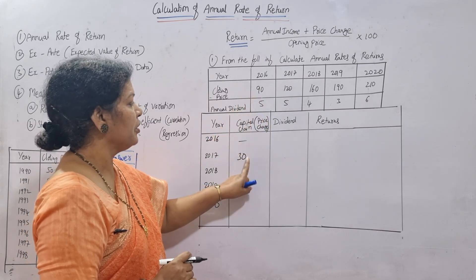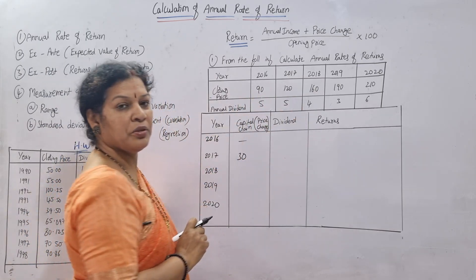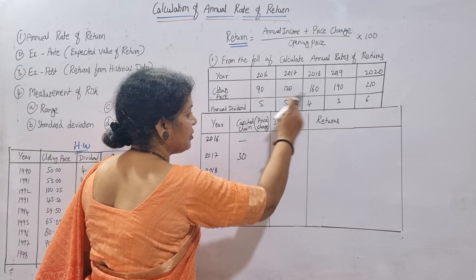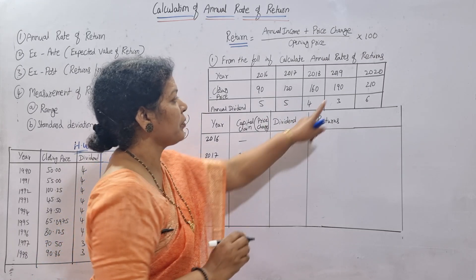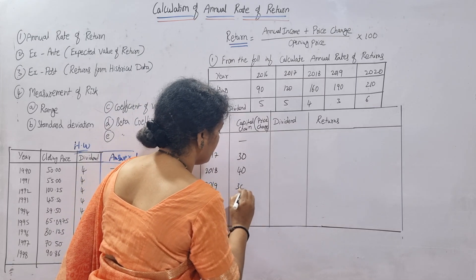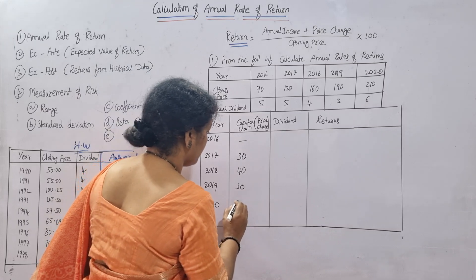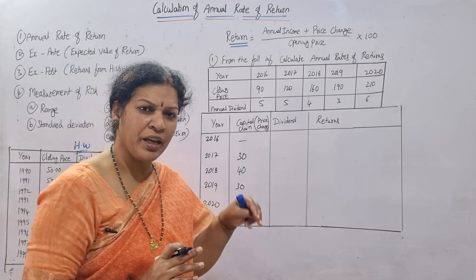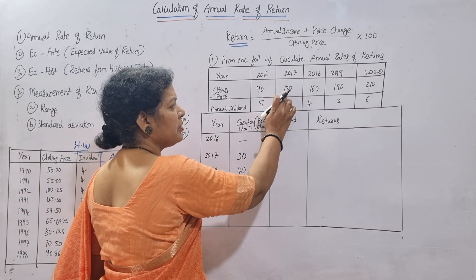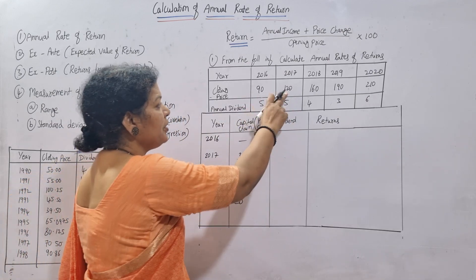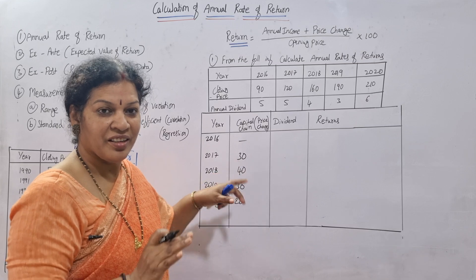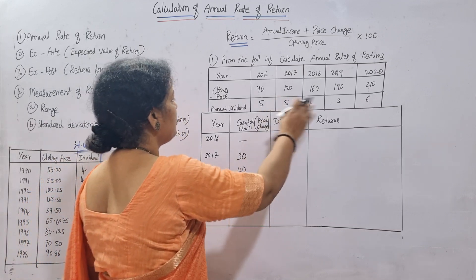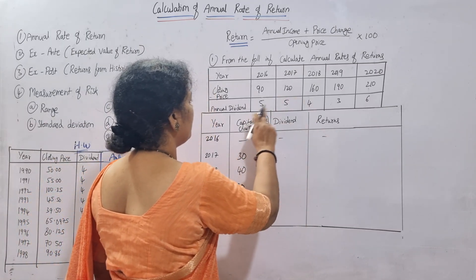Continuing price changes: 190 − 160 = 30, and 210 − 190 = 20. This price change is what we call capital gain. Note that sometimes capital gain can be a negative value — for example, if closing price is 80 and opening was 90, the change is −10. In this problem all values are positive.